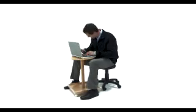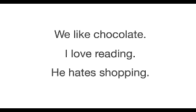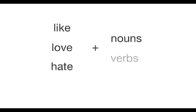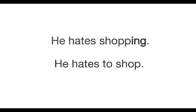Let's talk about the grammar in the movie. Look at these sentences: We like chocolate. I love reading. He hates shopping. What comes after the verb? Like, love, and hate can be followed by nouns or verbs. Chocolate is a noun. Reading is a verb. Shopping is also a verb. Look at shopping — here we use -ing on the end. You can also say 'He hates to shop.' Both sentences are OK.